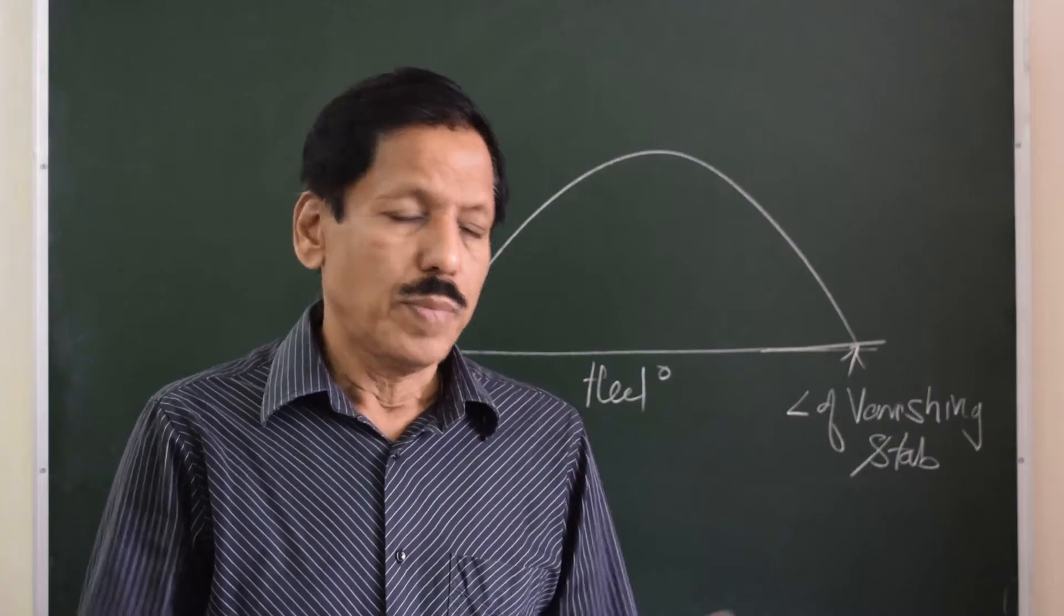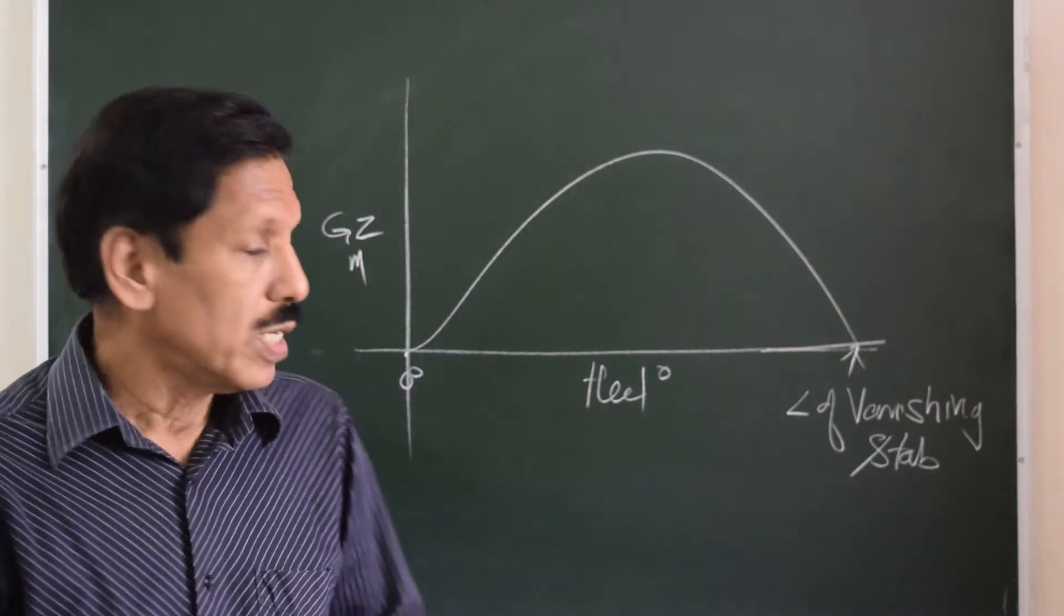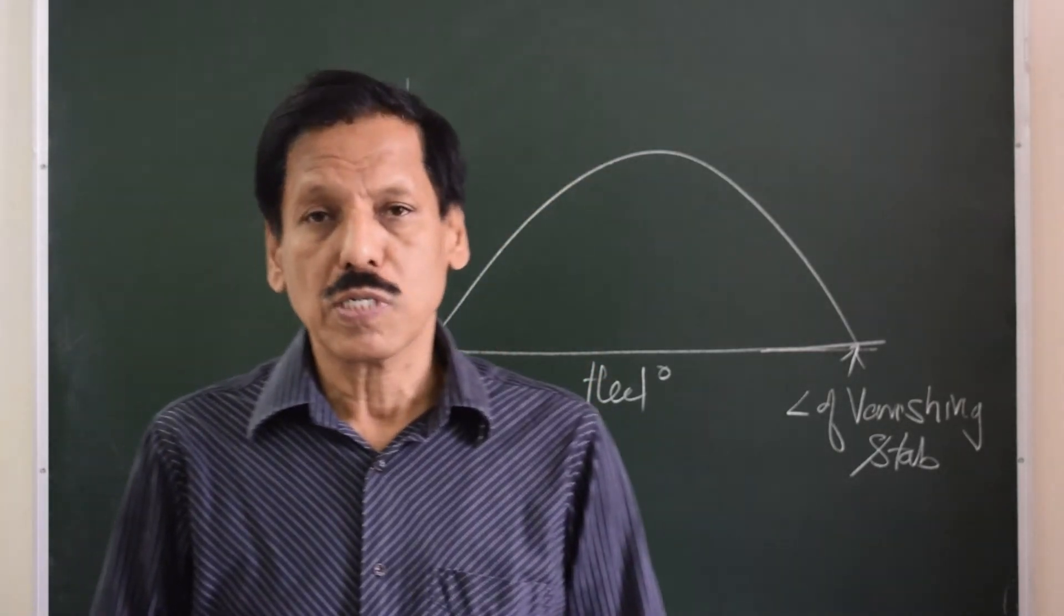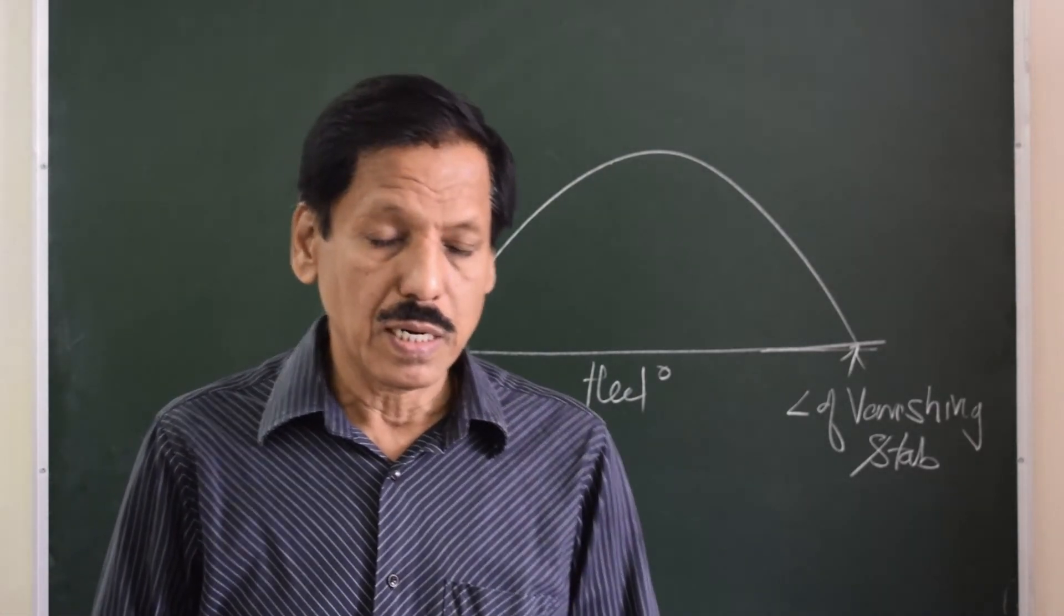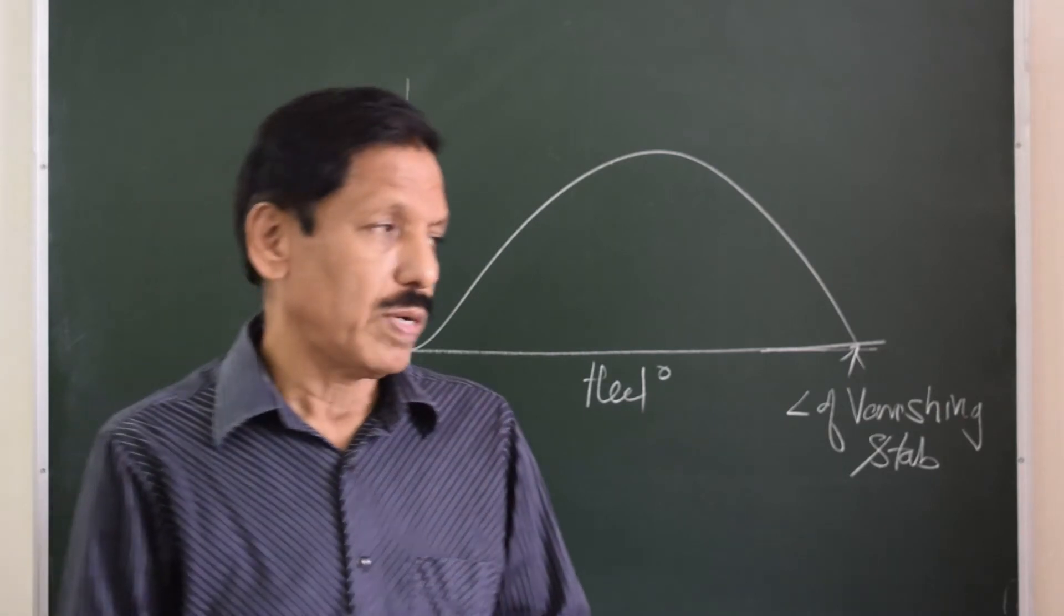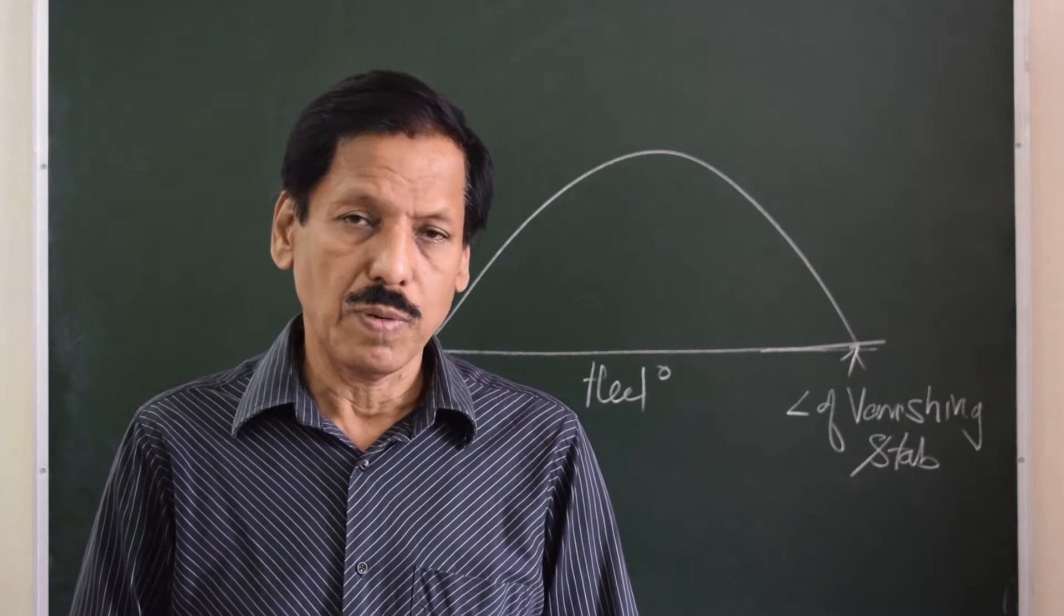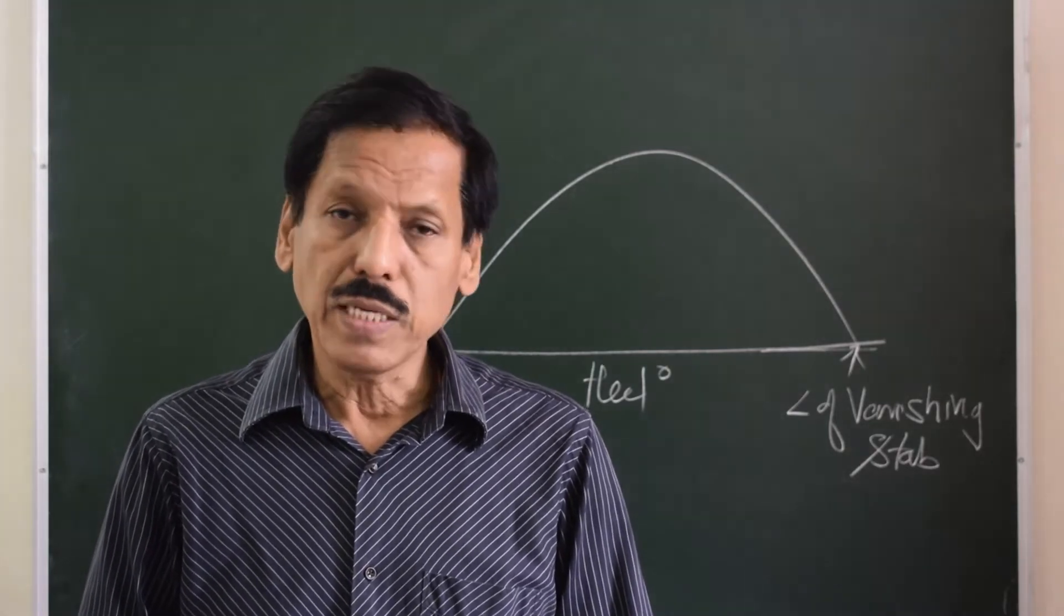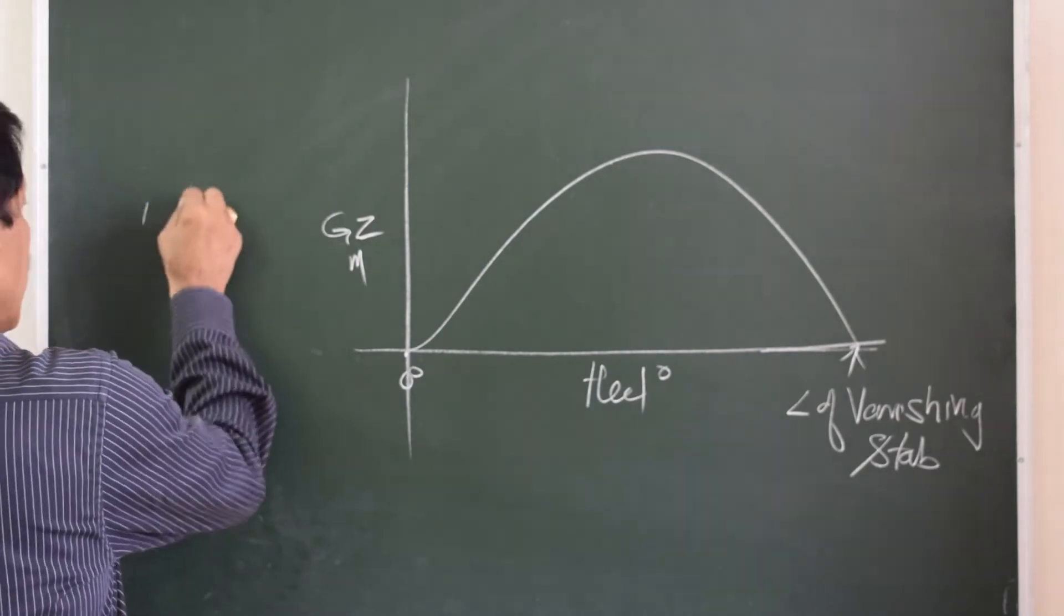Basically, as you know, the GZ curve's requirement is to satisfy or demonstrate any stability criteria. It may be intact stability criteria, damage stability criteria, or grain stability criteria. The GZ values for any ship are available by different means, and some of them are number one: wall-sided formula.